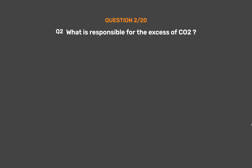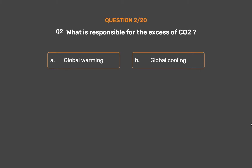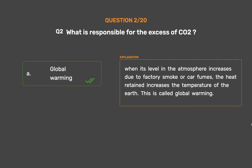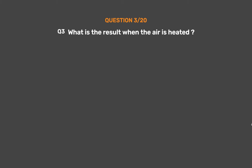Question number 2: What is responsible for the excess of CO2? Option A: Global warming. Option B: Global cooling. Option C: Both A and B. Option D: None of these. The correct answer is Option A, Global warming. When its level in the atmosphere increases due to factory smoke or car fumes, the heat retained increases the temperature of the earth. This is called global warming.